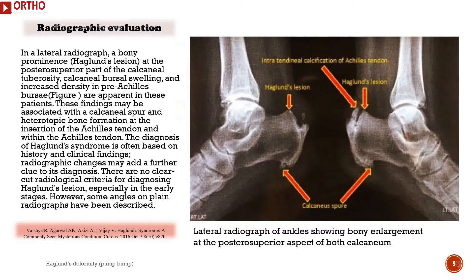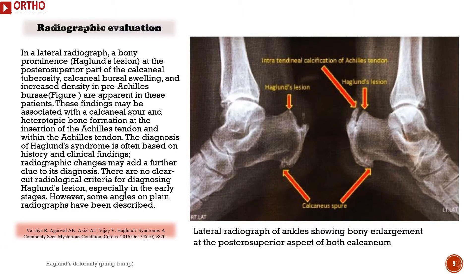In a lateral radiograph, a bony prominence — Haglund's lesion — at the posterior superior part of the calcaneal tuberosity, calcaneal bursal swelling, and increased density in the pre-Achilles bursa are apparent in these patients. These findings may be associated with a calcaneal spur and heterotopic bone formation at the insertion of the Achilles tendon and within the Achilles tendon.